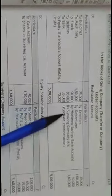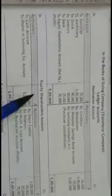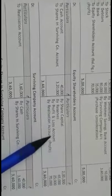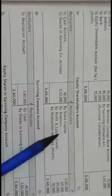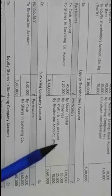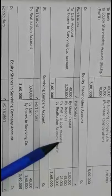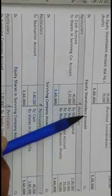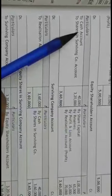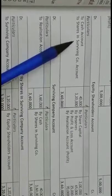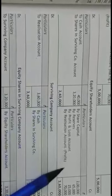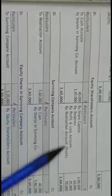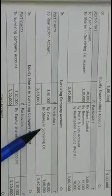There is a profit on realization of Rs.70,000 after showing PC due. Coming to the equity shareholders account, first you show the due amounts — share capital, reserves, and profit and loss account which are not taken over by the transferee company. Then make the payment to equity shareholders both in cash (Rs.40,000) and in the form of shares (Rs.3,20,000), plus the realization profit of Rs.70,000. The account will tally.